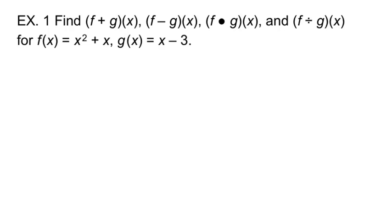So let's look at example 1. We're going to perform all of these operations on the two functions f and g. When I do these operations, I'm going to use green for function f and purple for function g.